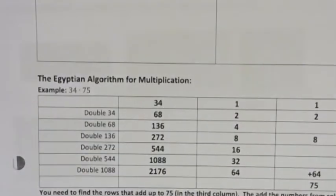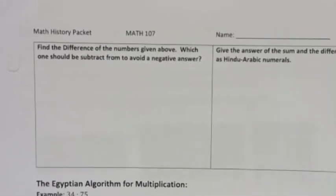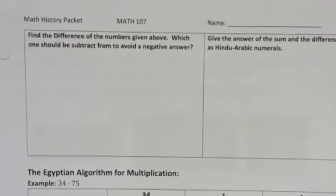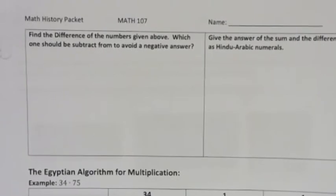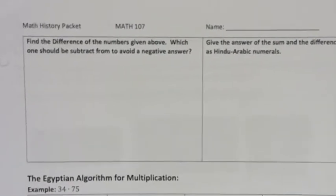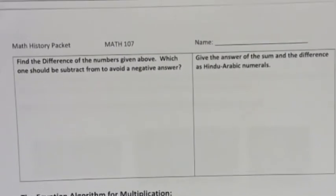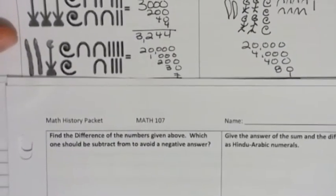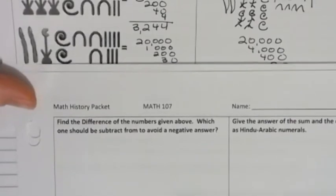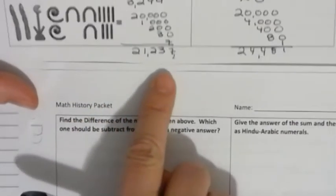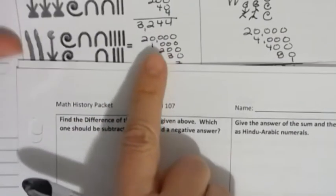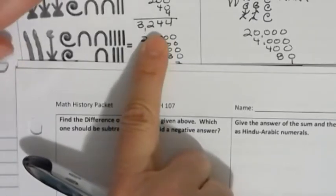And so indeed on the next page, it says, find the difference of the numbers given above, which one should be subtracted from to avoid a negative number. And so of course we want to subtract from the greater number, which was the second number, the two pointed fingers, lotus flower, this one right here, that was 21,000 compared to 3,244.